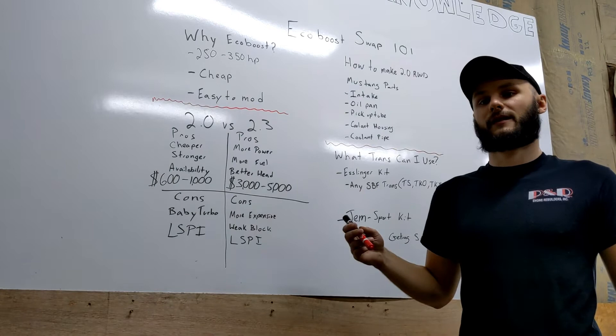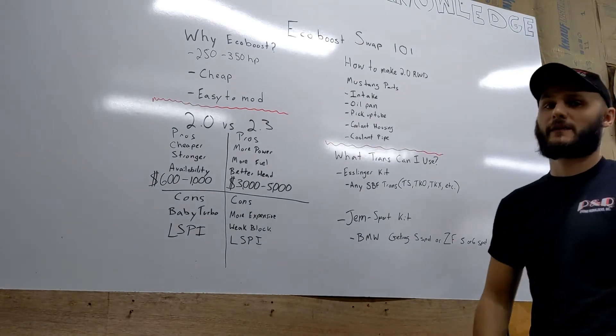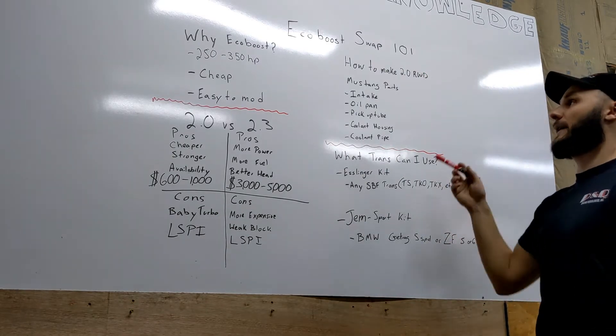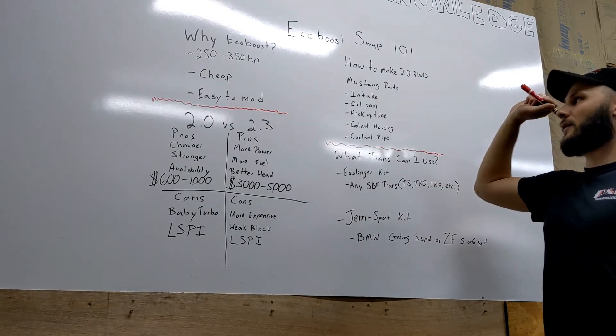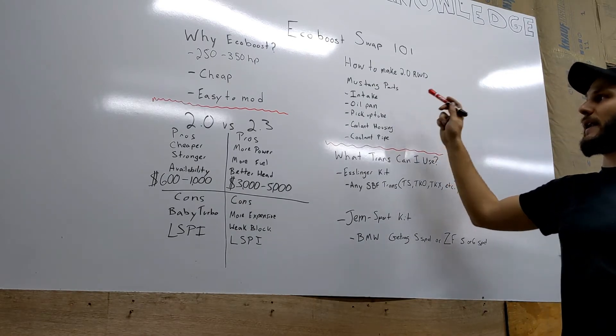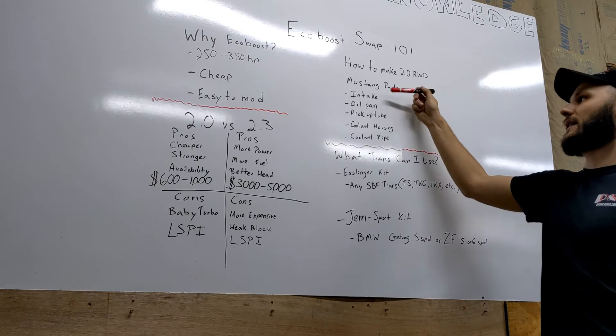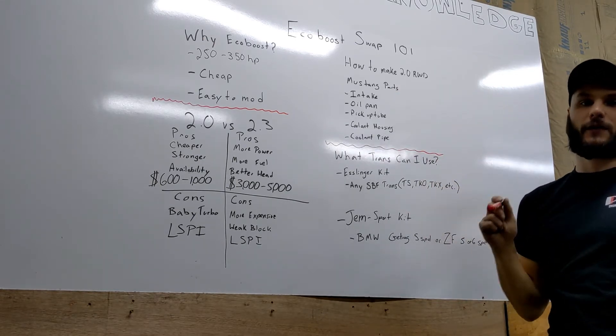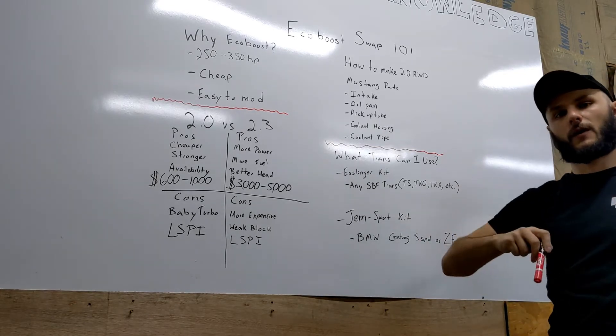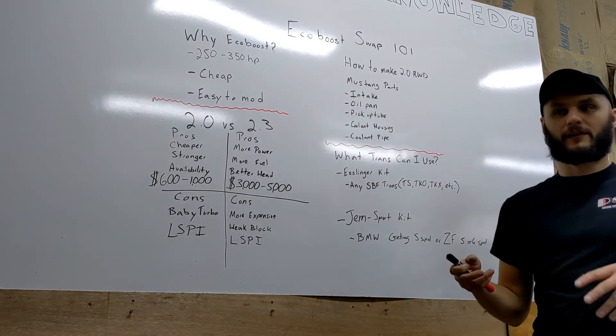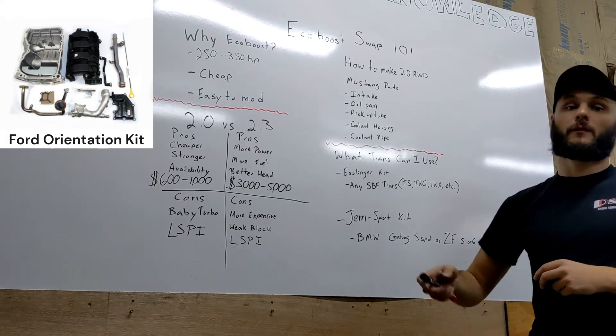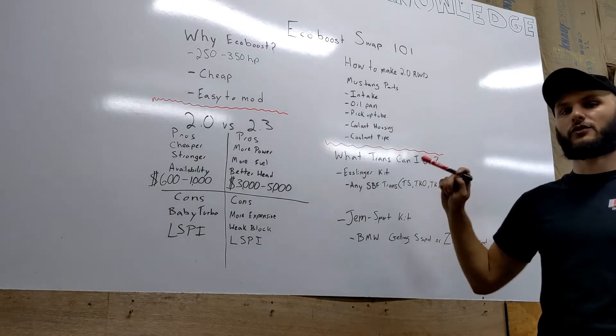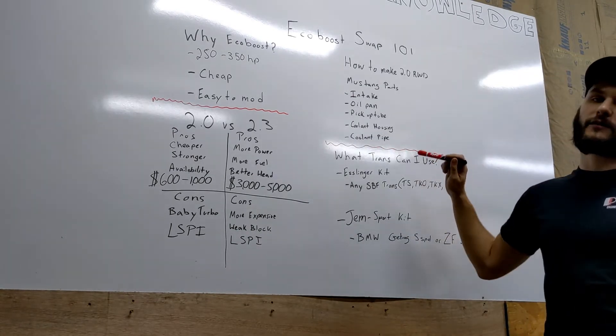You also might be saying the 2.0 is a front-wheel drive - it's front-wheel drive or all-wheel drive in all applications. So how to make it rear-wheel drive? Use Mustang parts. Go get a Mustang or 2.3 EcoBoost Mustang intake, oil pan, pickup tube, coolant housing, and coolant pipe. They all bolt on, they're interchangeable between the 2.3 and the 2.0. It'll basically be an orientation kit which Ford did sell at one point but they discontinued for who knows why, but all the individual parts are still available.